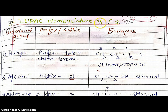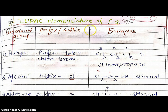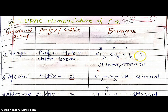Next, some important IUPAC nomenclature of functional groups. IUPAC stands for International Union for Pure and Applied Chemistry. For each functional group, we add a prefix or suffix word. First, halogen: add prefix halo — like chloro, bromo, or iodo. Example: CH3CH2CH2Cl — 1 carbon has chloro added, total 3 carbons called propane, so the name is 1-chloropropane.